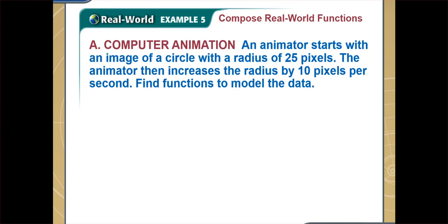An animator starts with an image of a circle with a radius of 25 pixels. The animator then increases the radius by 10 pixels per second. The circle is not a fixed circle — it is getting bigger and bigger. So for every second, the radius increases by 10 pixels, and since the radius increases, we get a bigger circle, which affects the area of our circle.